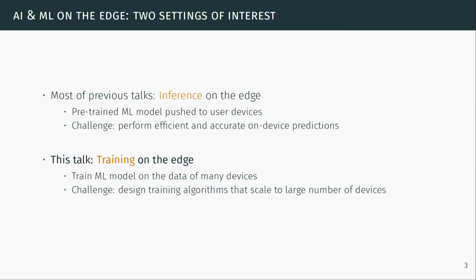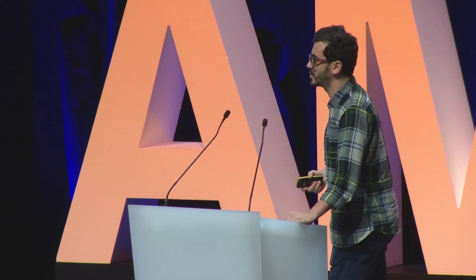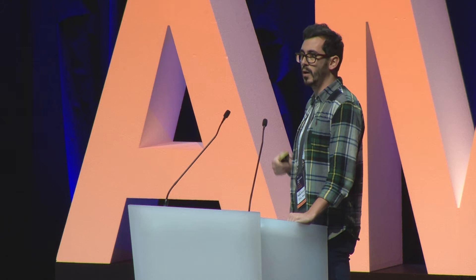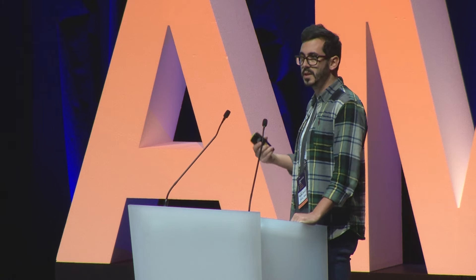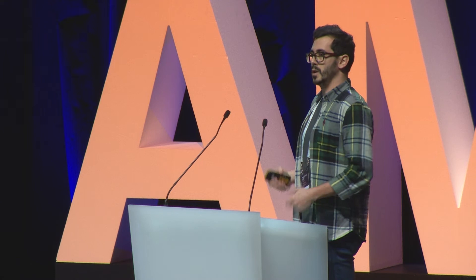As far as AI and ML on the edge is concerned, there are at least two settings of interest. Most previous talks considered inference on the edge, where you have an already-trained model from the cloud, pushed to user devices, and run on-device efficiently. In this talk I want to focus on training on the edge, where you don't have an ML model in the first place and want to train it across a large number of devices. The challenge is designing training algorithms that scale to many devices without being slowed down by communication and synchronization issues.